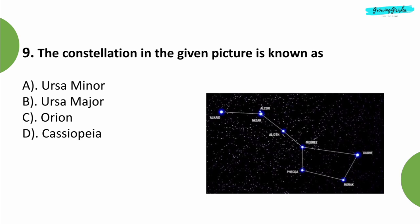Question 9: The constellation in the given picture is known as? Option B: Ursa Major.